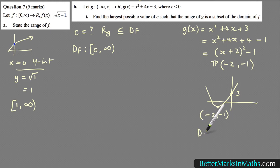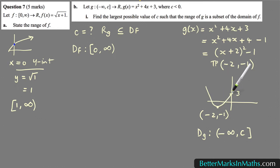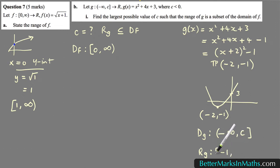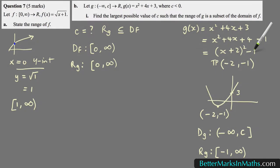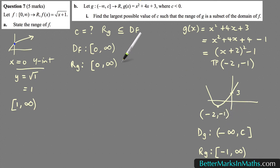The domain of g is from minus infinity to some value c, where c is a negative number. So the part of the graph you're working with goes from the left up to that point, not including the y-intercept. With that, the range of g would normally be from the lowest value of minus 1 up to positive infinity. But for the range of g to be contained in the domain of f, it can't start at minus 1 — it has to have 0 as the lowest y value.